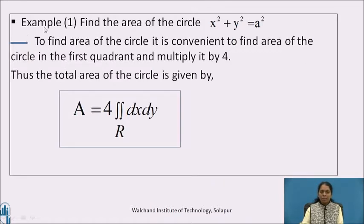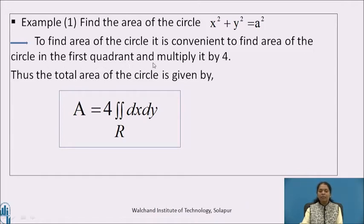Now let us solve an example for finding the area of the circle x² + y² = a². To find the area of this circle, it is convenient to find the area in the first quadrant and multiply it by 4. Thus, the total area of the circle is given by A = 4 ∬_R dx dy.